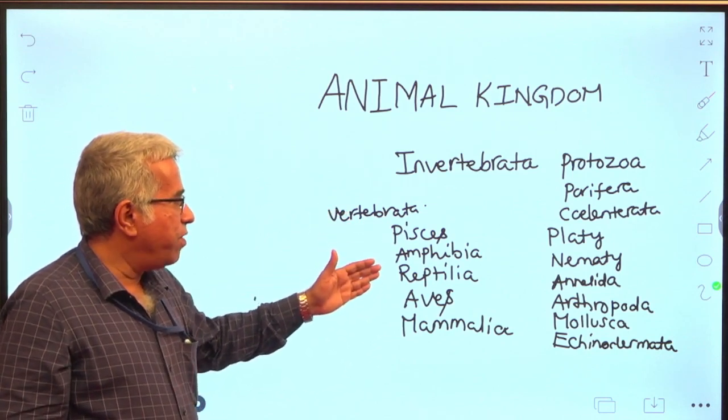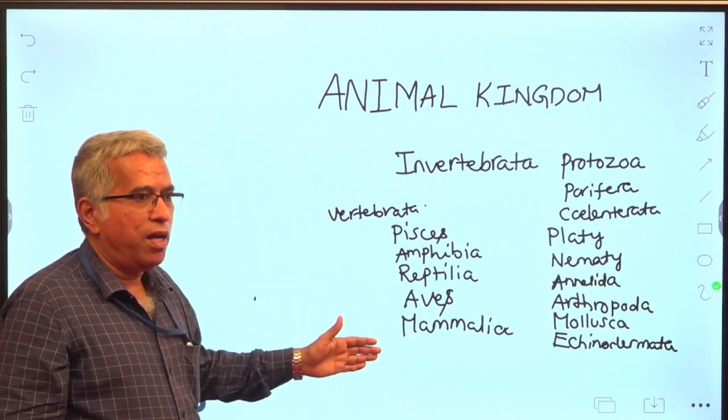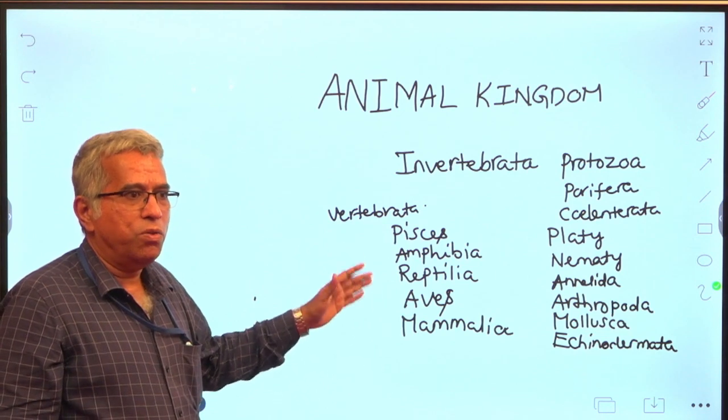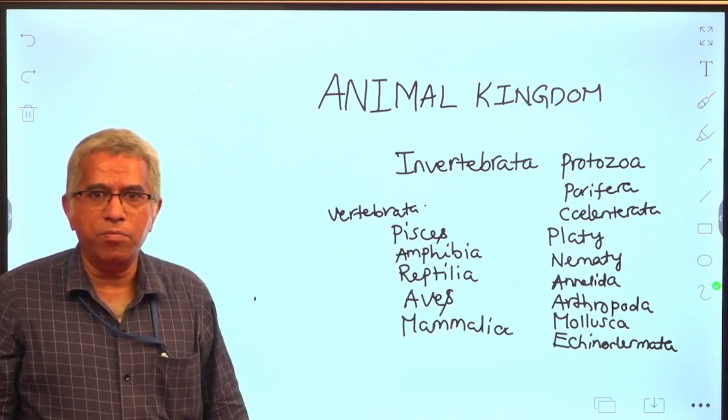Coming to vertebrata, fishes, amphibians, reptiles, aves, and mammalia are included under this. This is about the classification of animal kingdom. Thank you very much.